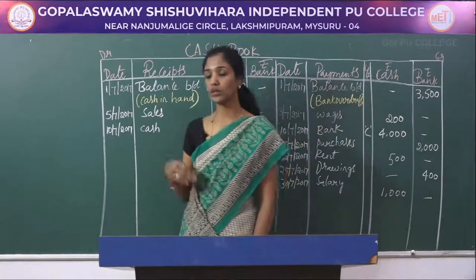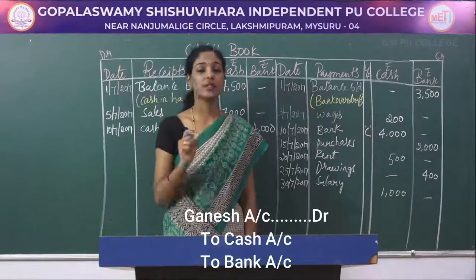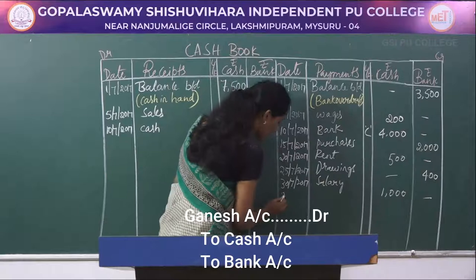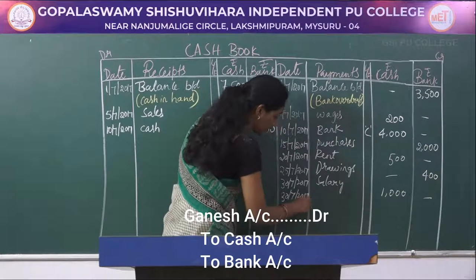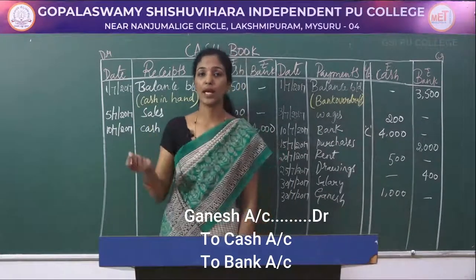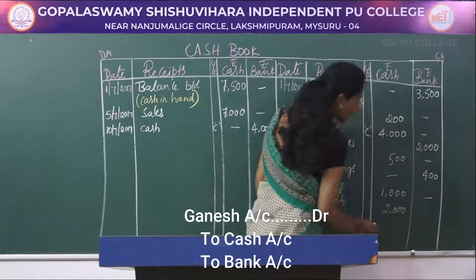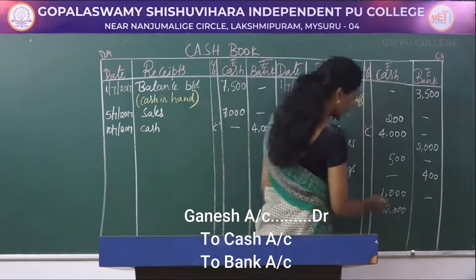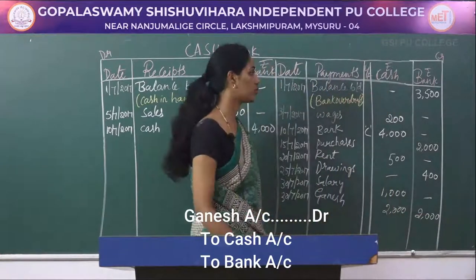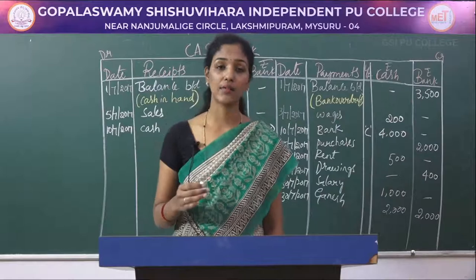For Ganesh's payment of rupees 4000: rupees 2000 is paid in cash and the remaining rupees 2000 is paid by cheque. This transaction appears on the payment side. Write 30/7/2017 'Ganesh'. The journal entry is: Ganesh account debited, cash account and bank account credited. Enter rupees 2000 in the cash column and rupees 2000 in the bank column.